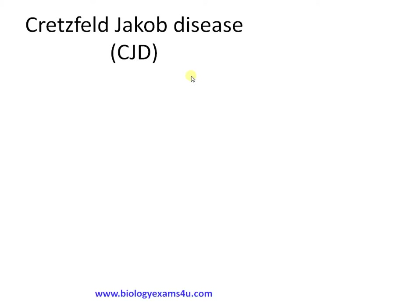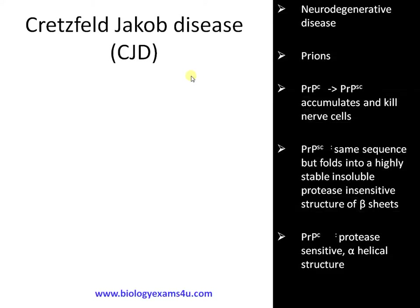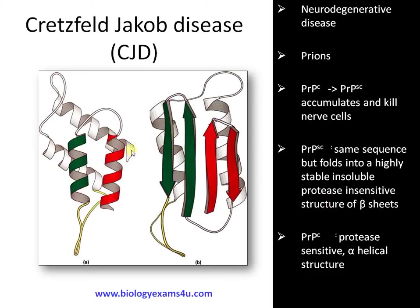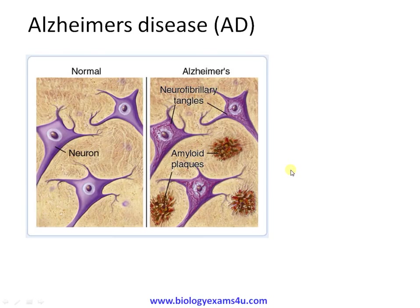One such disease is CJD — Creutzfeldt-Jakob disease — a neurodegenerative disease caused by prions, or infectious proteinaceous particles. In a normal cell, the counterpart is PrPC, which gets converted to PrPSc (scrapie form) that accumulates and kills neurons. PrPSc has the same amino acid sequence but folds differently, forming beta sheets that are highly protease-insensitive and insoluble, unlike PrPC which is protease-sensitive and has an alpha-helical structure. This disease is essentially a protein folding abnormality.